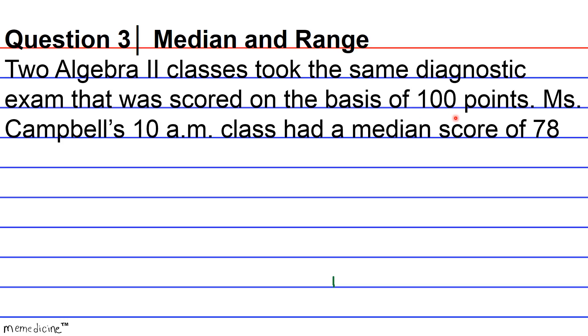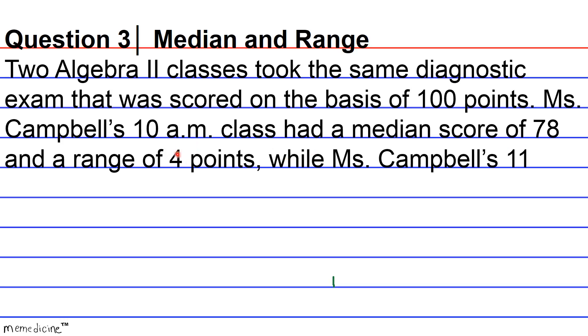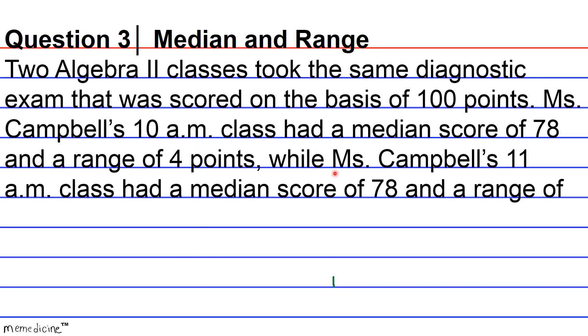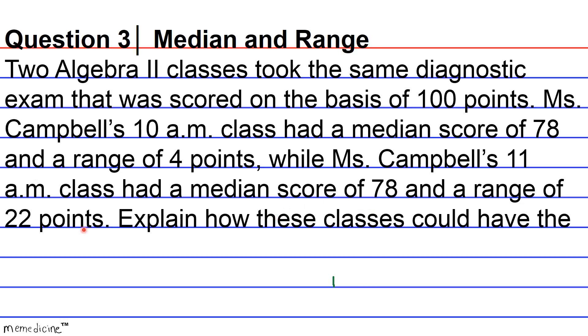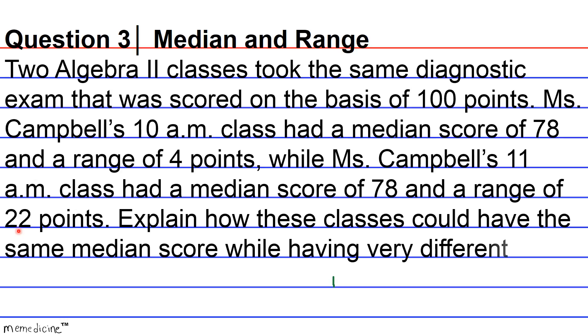Ms. Campbell's 10 a.m. class had a median score of 78 and a range of 4 points, while Ms. Campbell's 11 a.m. class had a median score of 78 and a range of 22 points. Explain how these classes could have the same median score while having very different ranges.